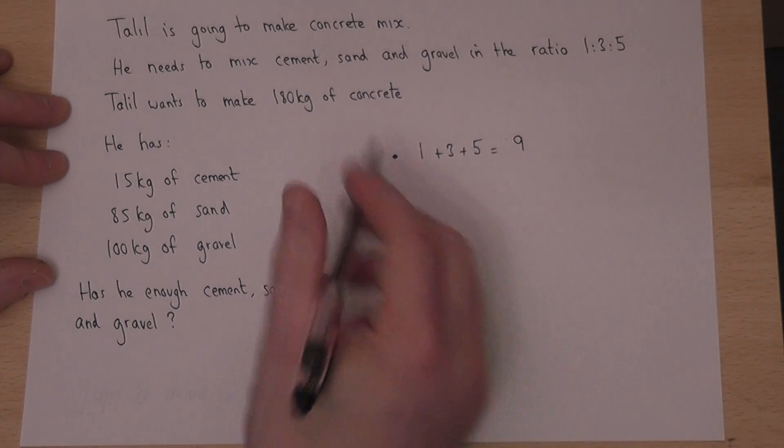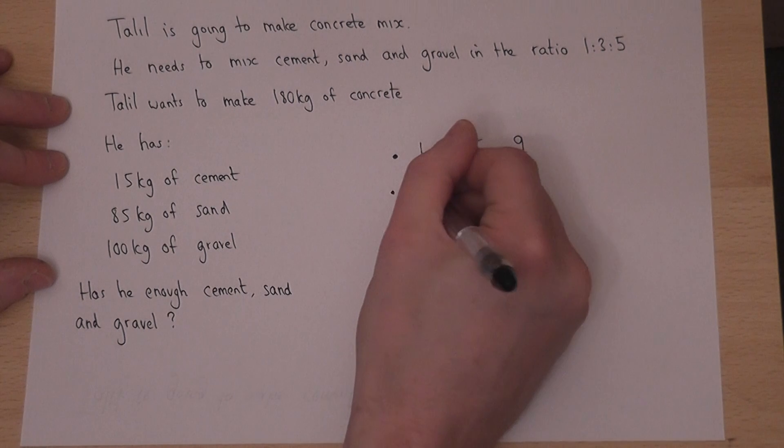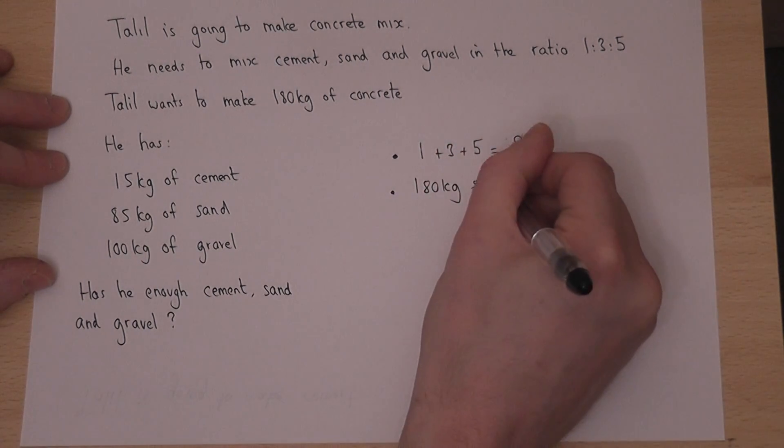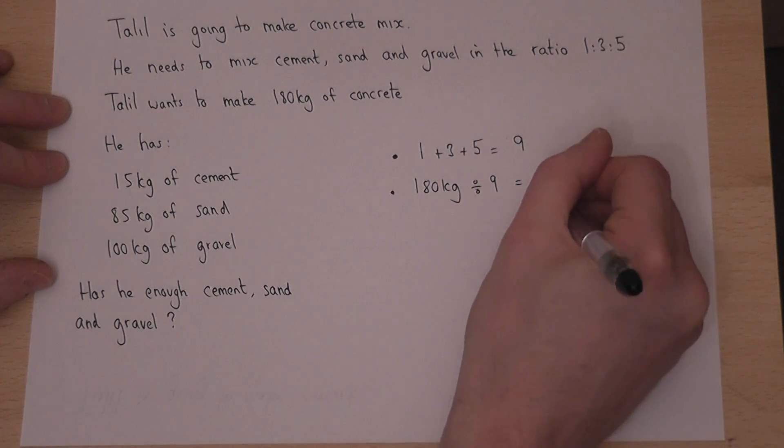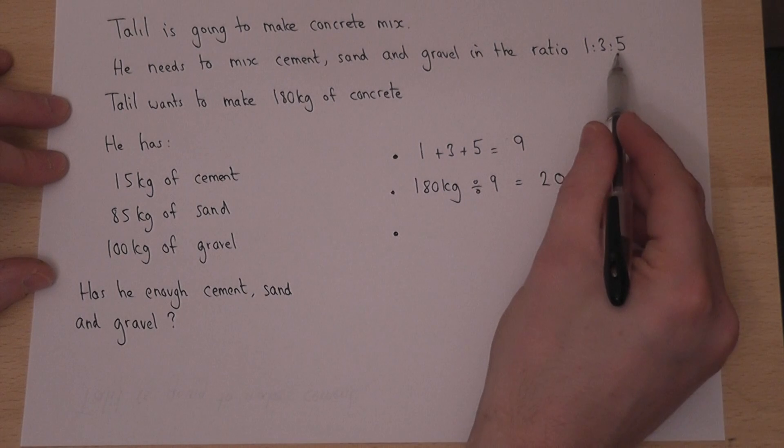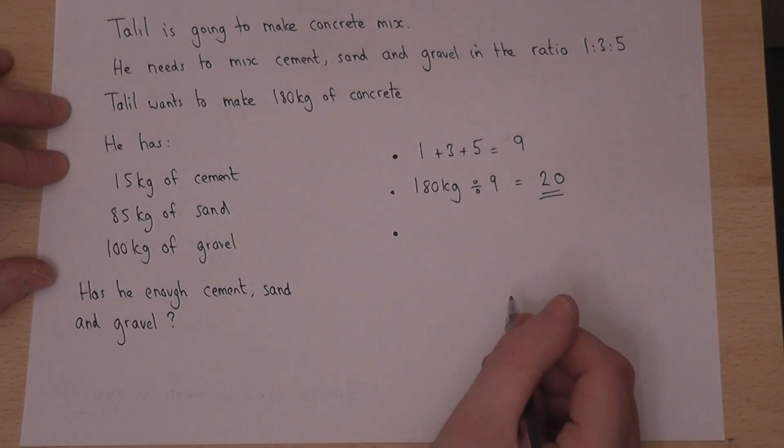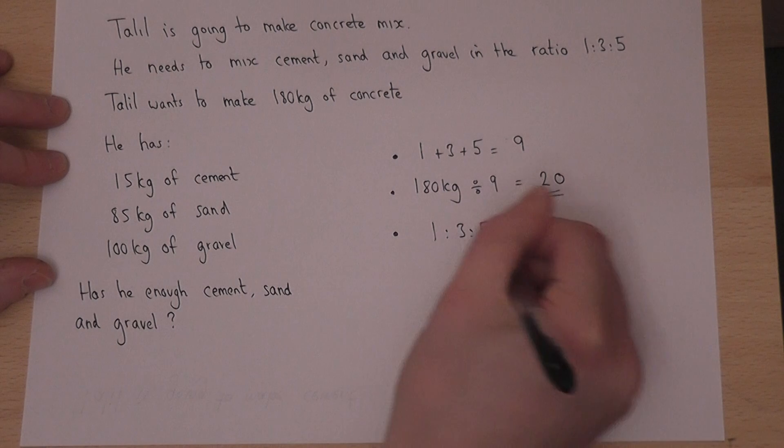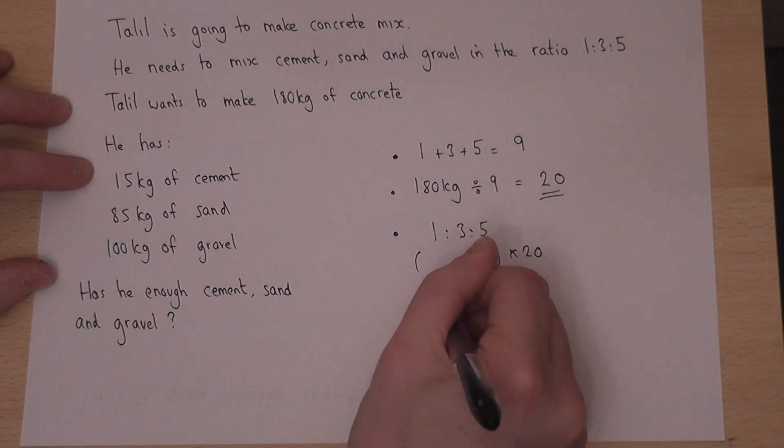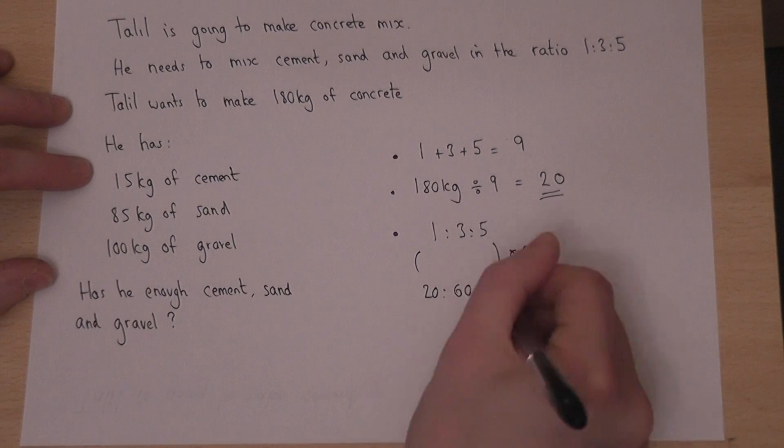We then divide the total amount he wants to make by 9, which gives us 20. We then multiply the given ratio by this number, which is 20. So 1, 3, 5 times by 20 gives us 20, 60 and 100.